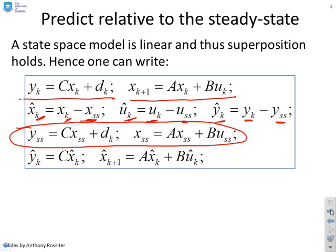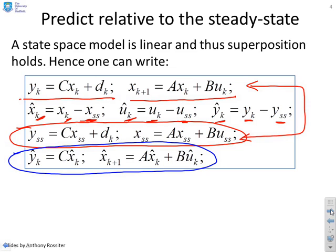Y_SS equals CX_SS plus D_K and X_SS equals AX_SS plus BU_SS. Now if I use superposition and these two together, along with the definitions of the deviation variables, then you can very quickly see that the following must hold.